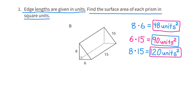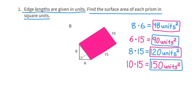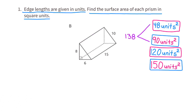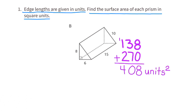And finally, the last side has dimensions 10 by 15, so its surface area is 150 square units. Adding all the surface areas together, the surface area for Prism B is 408 square units.